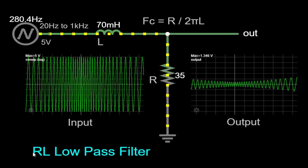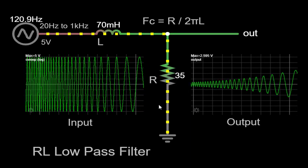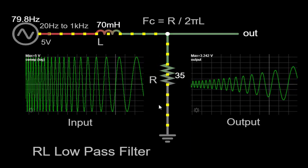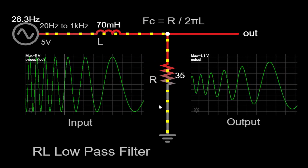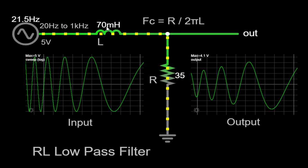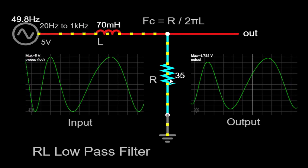The RL low-pass filter consists of two main components, an inductor L and a resistor R. These passive elements play a crucial role in determining the behavior of the filter. In our specific example, we have a 70 millihenry inductor and a 35 ohm resistor connected in series.